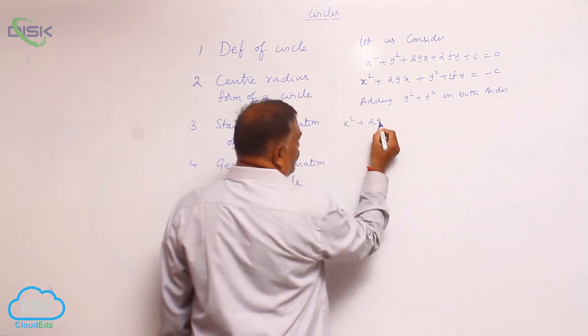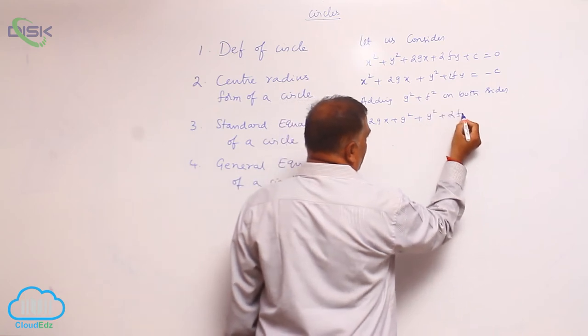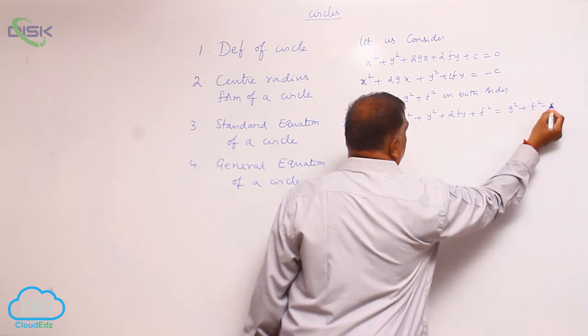x square plus 2gx plus g square, y square plus 2fy plus f square is equal to g square plus f square minus c.